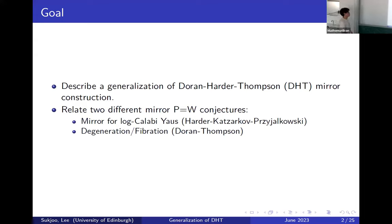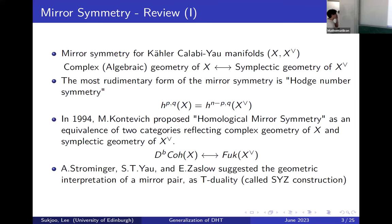The first one is proposed by Harder, Katzarkov, and Dieker for mirror symmetry for local Calabi-Yau varieties. The second one is more recent, in the context of degeneration and fibration. We'll review all these things and try to relate them. Let me briefly recall some backgrounds.